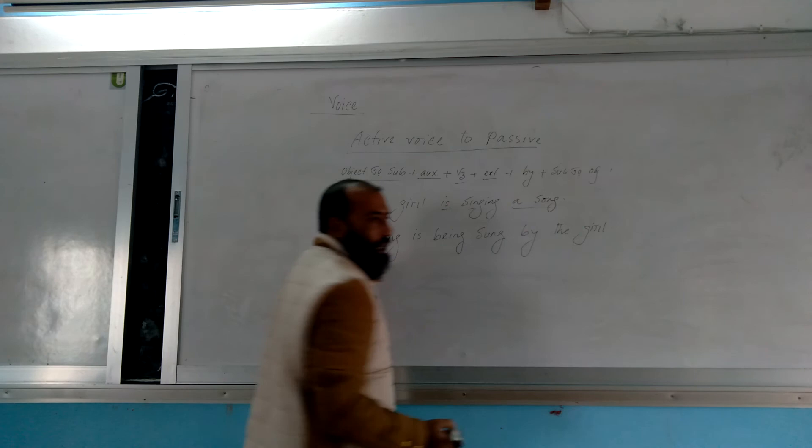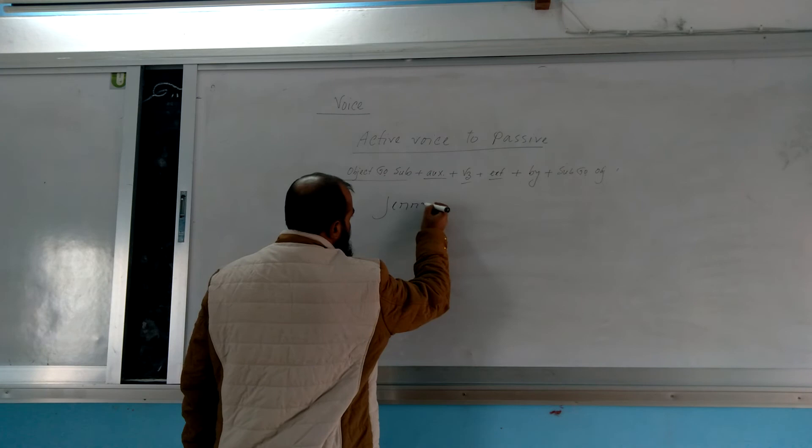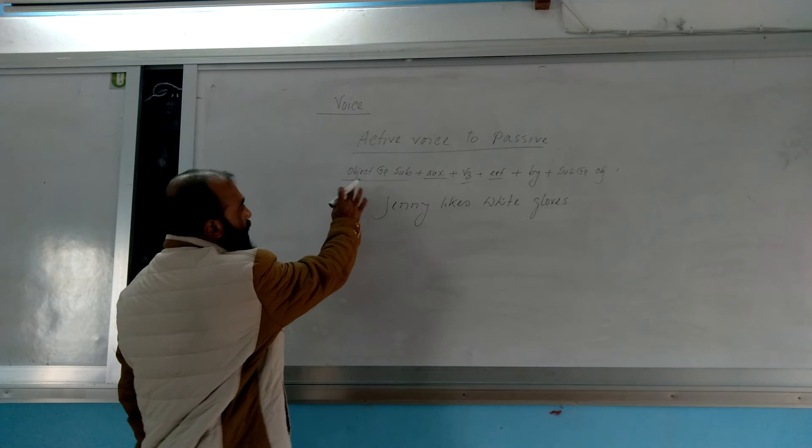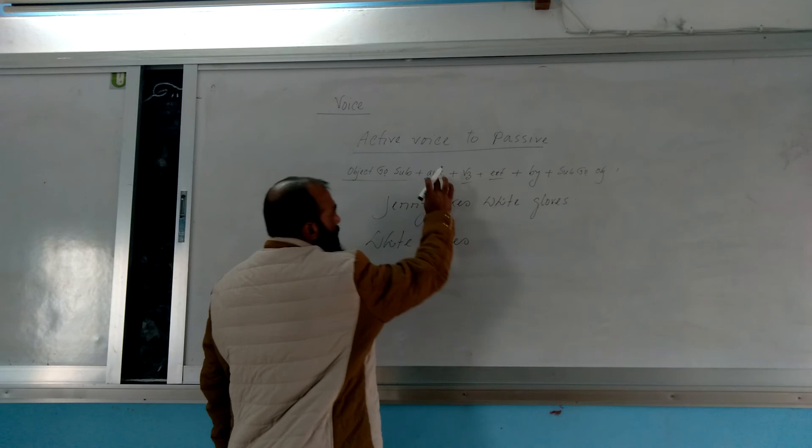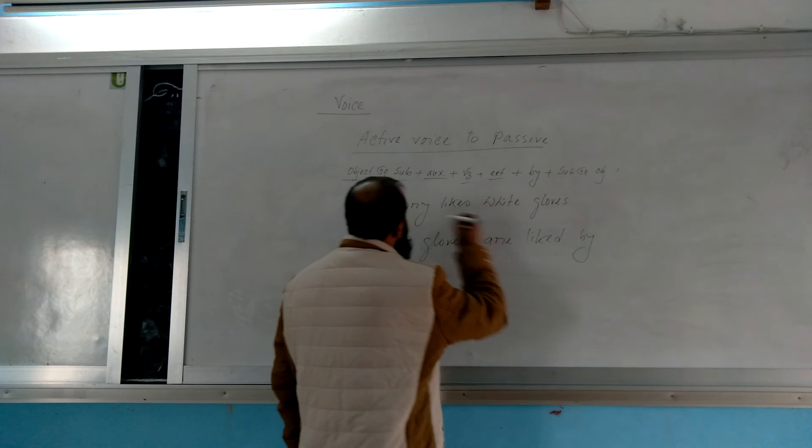Another example. Jerry likes white gloves. First, object becomes subject. Jerry likes - what does he like? White gloves. Then auxiliary verb: since it's base form and gloves is plural, we add are. Be verb's third form is liked. Then by, and subject becomes object: Jerry. Clear?